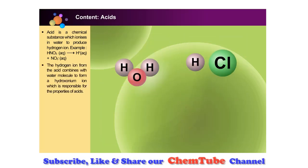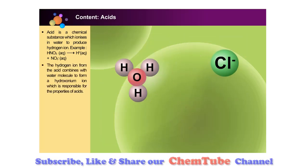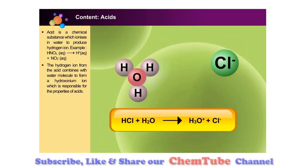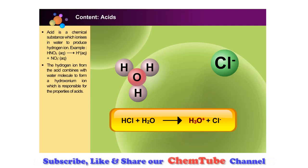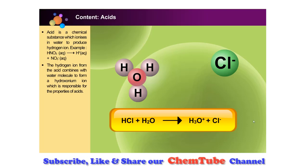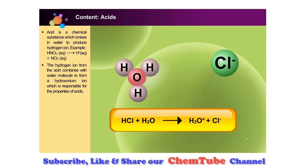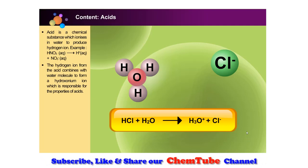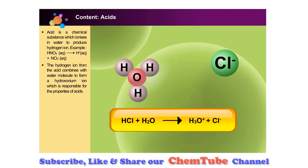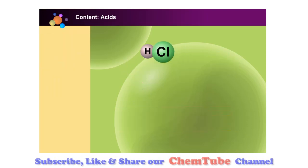The hydrogen ion from the acid combines with a water molecule to form a hydronium ion. It is this aqueous hydrogen ion that is responsible for the properties of acids. We can therefore conclude that acids are substances that produce hydrogen ions or hydronium ions when dissolved in water.